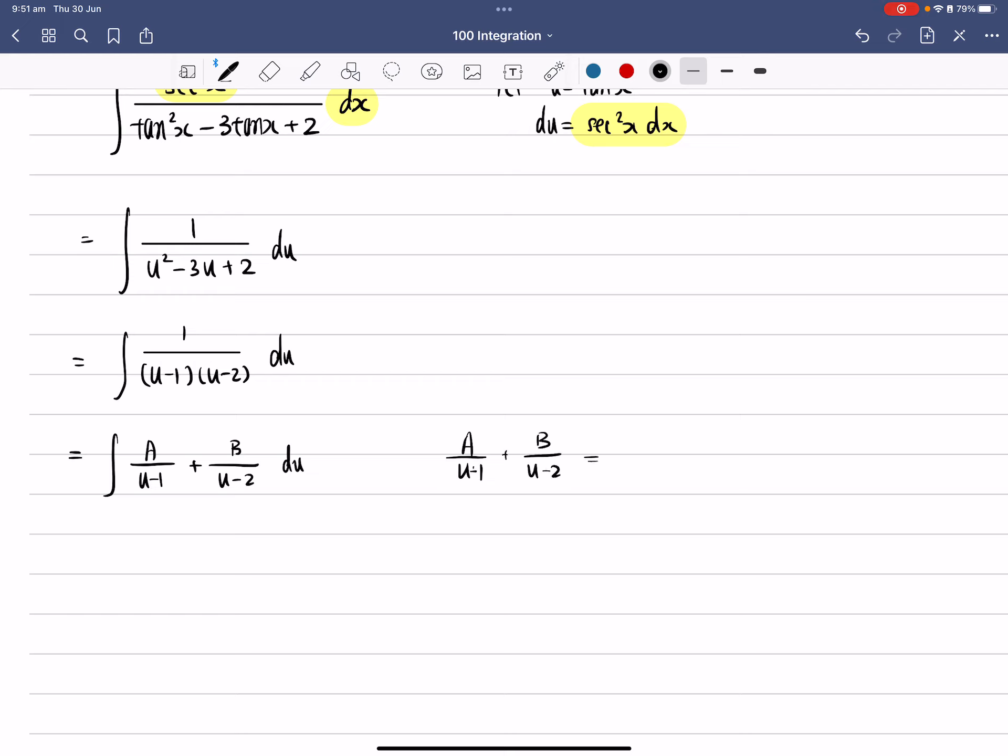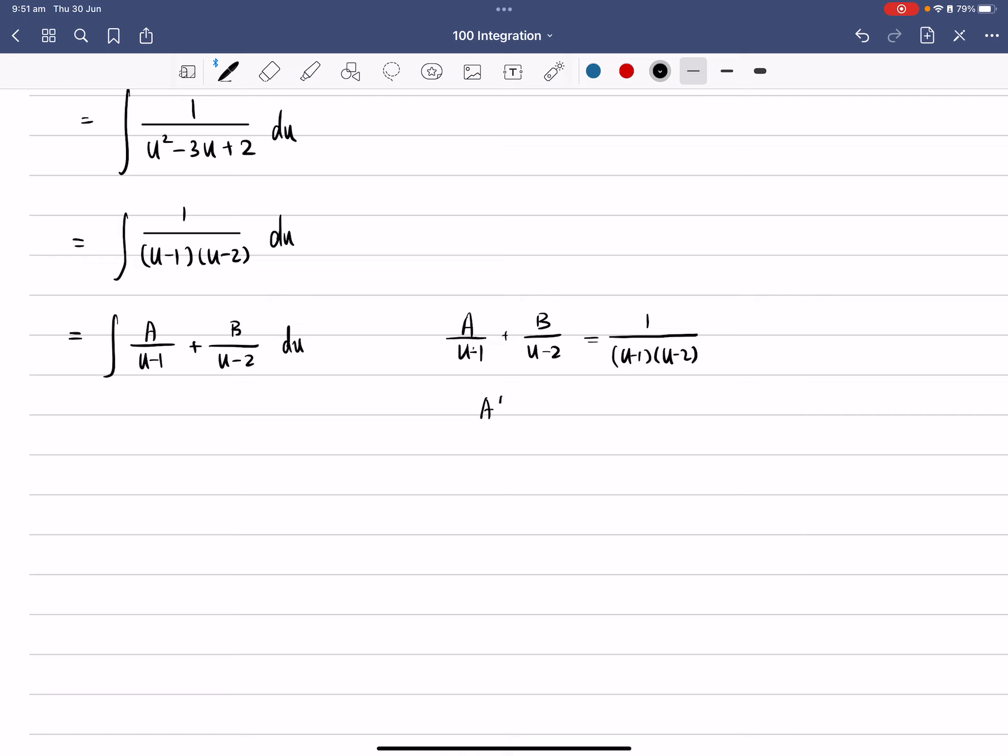Okay. It's not a very difficult partial fraction to do. The numbers are quite easy, so it should be a very simple substitution to get what's B and A. Okay, so that gives you A(u - 2) + B(u - 1), and everything is equal to 1.